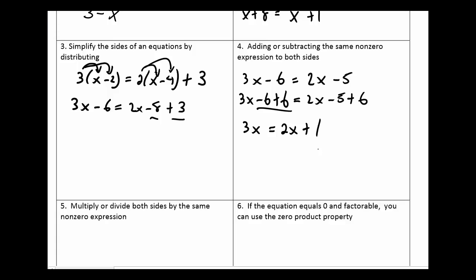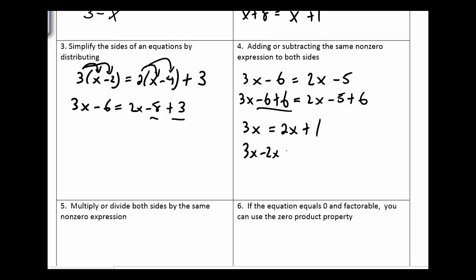Then I can subtract 2x from both sides, with the idea that I'm trying to solve for x eventually. So, 3x minus 2x — I'm just taking the same thing off of both sides. Then I can apply the combine like terms idea: 3x minus 2x is just x, and the 2x's cancel each other out and we're left with 1. So now we have our first actual solution.